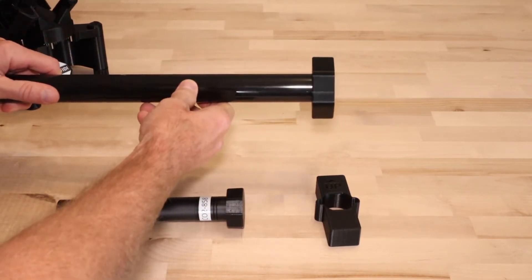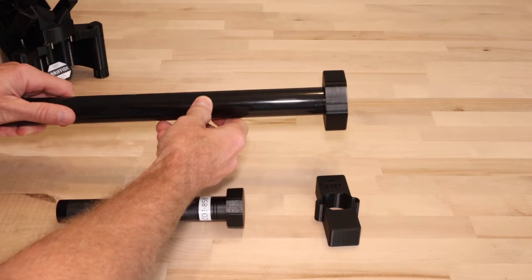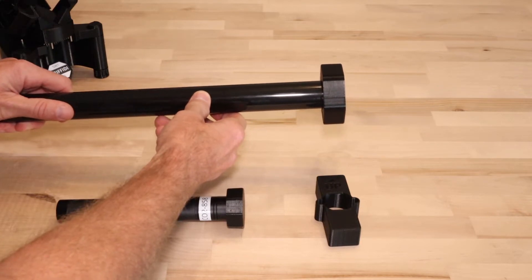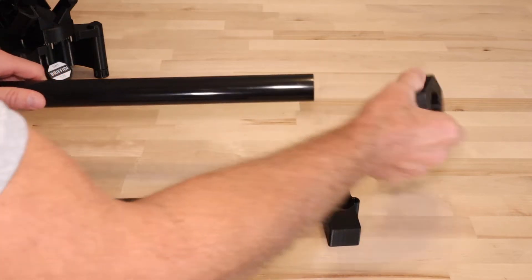For this type, configuration number one is with the weight fully installed onto the end of the rod. Number two is with the weight removed.